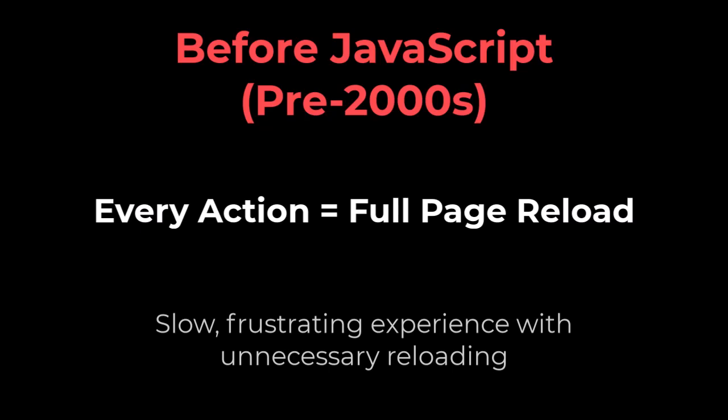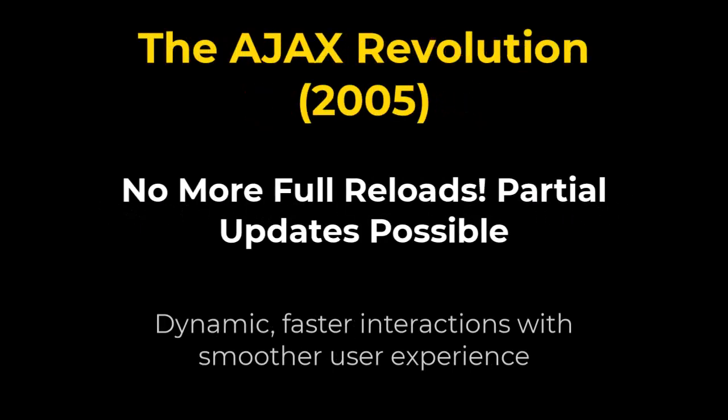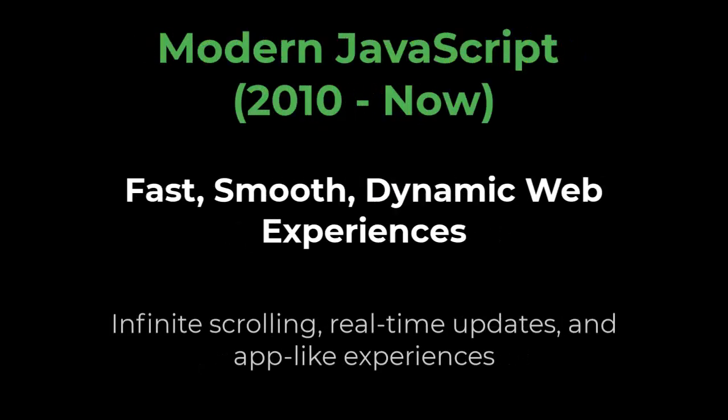Before JavaScript, websites worked like old-school DVDs — you had to refresh the entire page just to see new content. And reloading the entire page was, and still is, painful. But JavaScript changed everything. It allowed us to update just sections of a page, like new comments appearing on YouTube, interactive chat, or new tweets loading on Twitter, without refreshing the entire site. This made websites faster, smoother, and more interactive, completely changing the way we use the internet today.